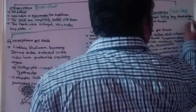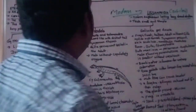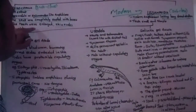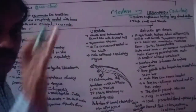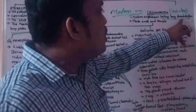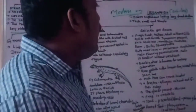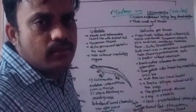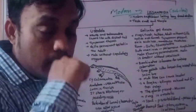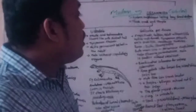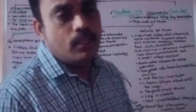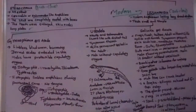Lissamphibia lack a bony dermal skeleton — the exoskeleton is not covered with any scales. In contrast, Stegocephalia had bony scales. In Lissamphibia, teeth are very small and simple, unlike Stegocephalia where teeth were very enlarged.